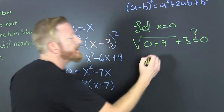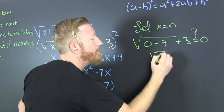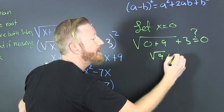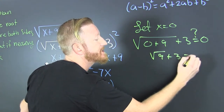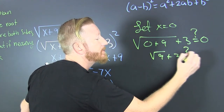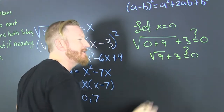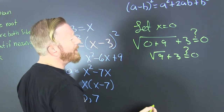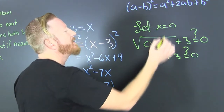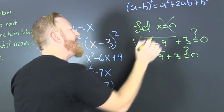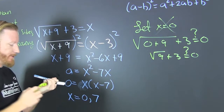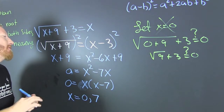Let's check x equals zero. That's the square root of zero plus nine, plus three. Does that equal zero? That's the square root of nine plus three — does three plus three equal zero? No. Zero is not a solution.